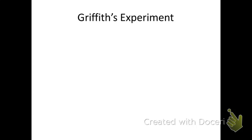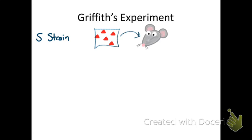The first in a set of landmark studies was done by Frederick Griffith. He injected mice with various strains of bacteria. One was the S strain, and when it was injected into mice, it killed the mice. This was a very virulent form of the bacteria.